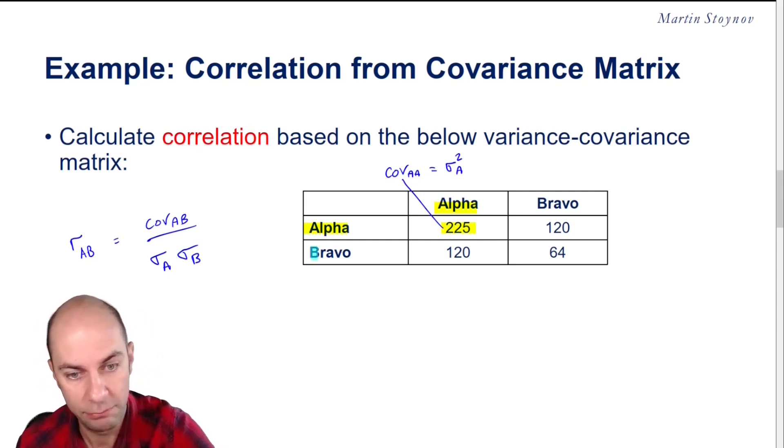And obviously, where Bravo intersects Bravo, i.e. that 64 number, that must be the variance of B. So basically, if you take that leading diagonal, depending on how many numbers you're given in this table, this will provide you always the variances.